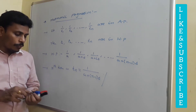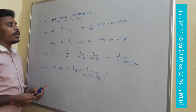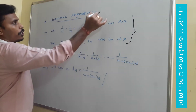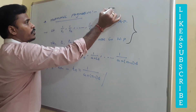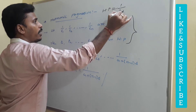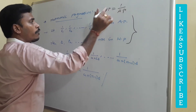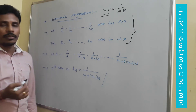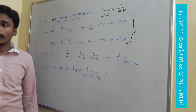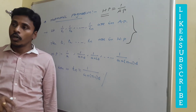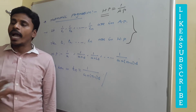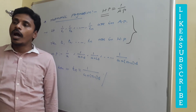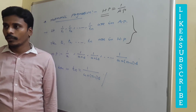As I told you, harmonic progression is nothing but the reciprocals of arithmetic progression — harmonic progression equals 1 divided by arithmetic progression. So if you have any problem in harmonic progression, you just reciprocal the terms of that harmonic progression to get an arithmetic progression, solve in arithmetic progression, and then reciprocal again for the answer.